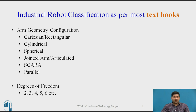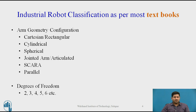Another classification is based on degrees of freedom. Theoretically speaking, you can have any number of degrees of freedom, but in practice most industrial robots will have six degrees of freedom. Four or five is also very common — for example, SCARA robots and parallel robots typically have four degrees of freedom. But most jointed arm robots you find today will have six degrees of freedom. This is another way you can classify robots, and it's followed by most textbooks.